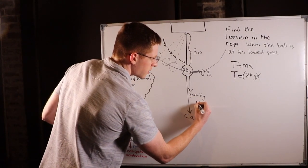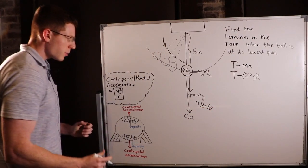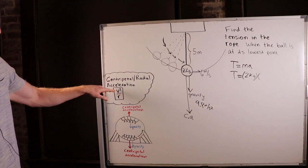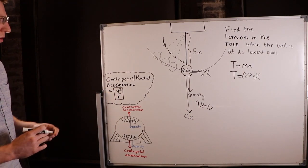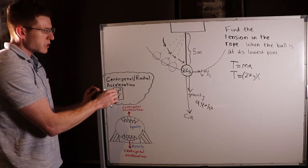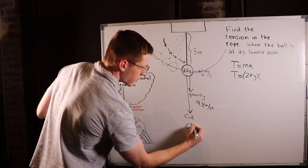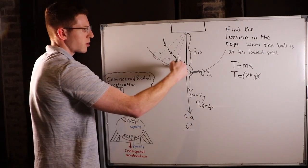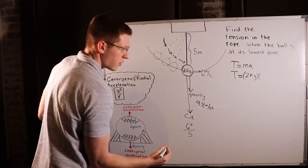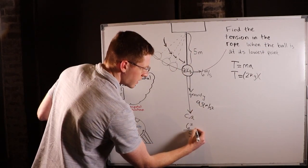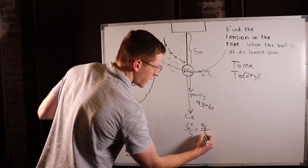So gravity, we know, is always going to be 9.8 meters per second squared. But centripetal acceleration, we have to calculate with this expression, velocity squared over radius of the circle or partial circle. So we know velocity is 6 meters per second. So we'll have 6 squared over the radius of this partial circle, which is 5. So our gravity is 9.8 and our centripetal acceleration is 36 over 5.